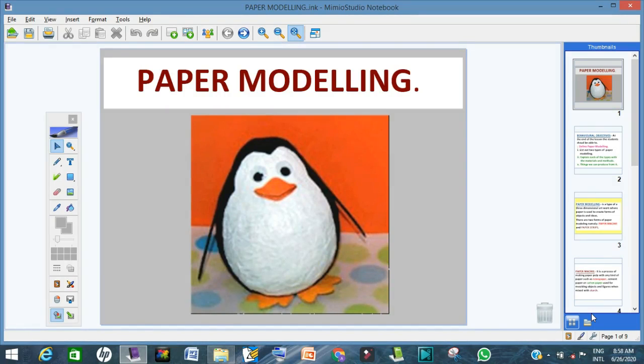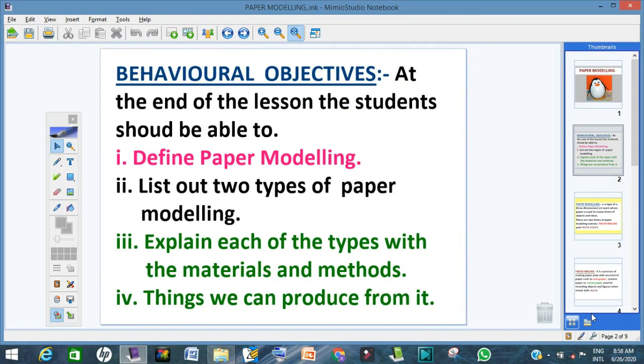Students, today we are into another topic: paper modeling. What are our stated objectives? One, define paper modeling. Two, list out two types of paper modeling. Three, explain each of the types with the materials and methods. And four, things we can produce from it.